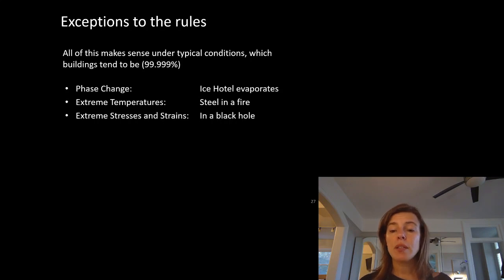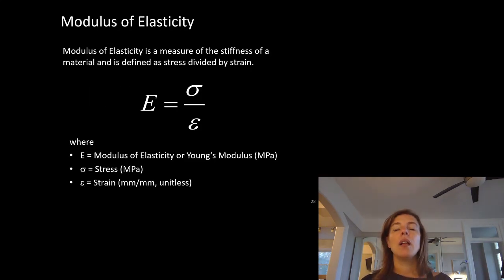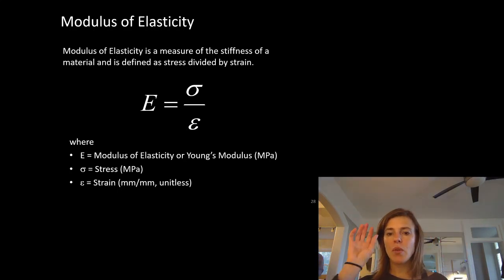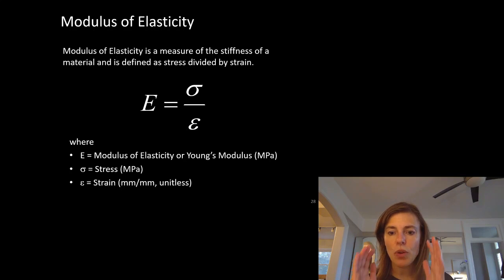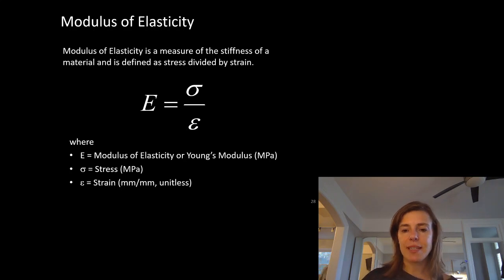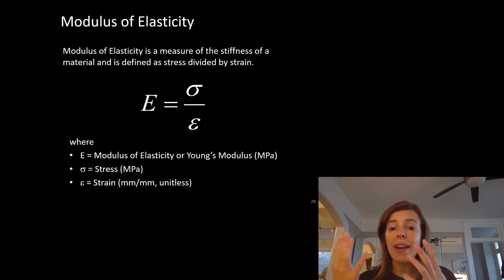Extreme stresses and strains — as you approach a black hole or something with extreme gravity, you would start to see changes in stress and strain principles. Here's the really cool thing: in the regular behavior of materials there is a relationship between stress and strain. That is what we call the modulus of elasticity — our ability to talk about how much a material moves due to a force. We can start to predict things with this. If we know the modulus of elasticity, figured out by testing small objects where we know the force, size, and how much it moves, we can calculate stress and strain.